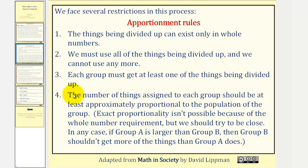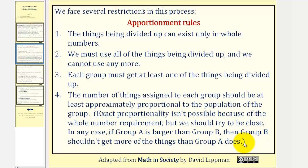Four, the number of things assigned to each group should be at least approximately proportional to the population of the group. Exact proportionality isn't possible because of the whole number requirement, but we should try to be close. In any case, if group A is larger than group B, then group B shouldn't get more of the things than group A.